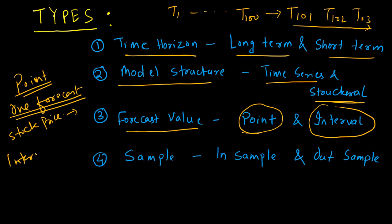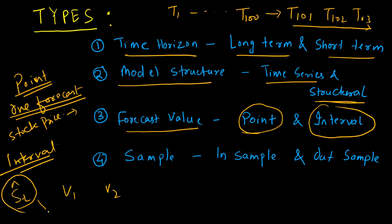In the interval forecast, on the other hand, you want the forecast within a certain range. You want to know if your forecast value lies between two range values — V1 and V2 — with a certain confidence. The confidence could be a 95% or 99% confidence interval. That is how interval forecast differs from point forecast.